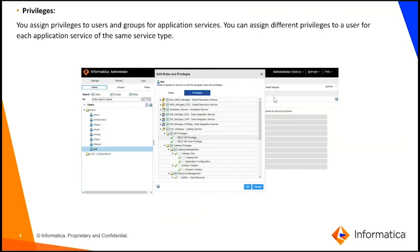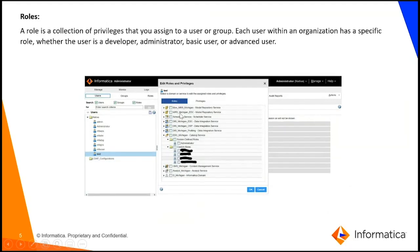Privileges can be assigned to users and groups for your application services such as EDC, DPM, MRS, etc. You can assign different privileges to users for each application service of the same service type. As you can see, there are different types of privileges under EDC: API privileges, catalog privileges, and resource management privileges, which you can assign to a user.